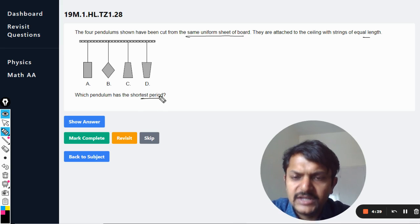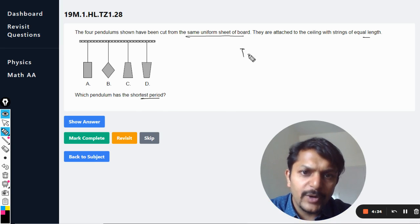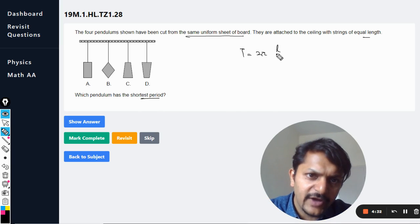Which pendulum has the shortest time period? In the case of pendulum, what is the formula for it? The formula is T = 2π√(l/g).